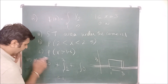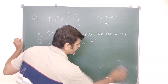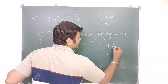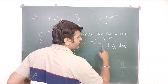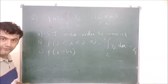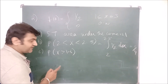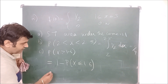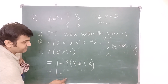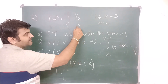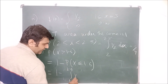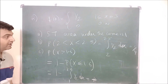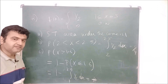Now for the second part: the probability from 2 to 2.5 is the integral from 2 to 2.5 of F(x) dx, which gives 1/2 times 0.5 = 0.25. For the probability that X is greater than 1.6, you use: one minus probability X ≤ 1.6, which is one minus the integral from minus infinity to 1.6 of F(x) dx. Since the function is zero until one, this becomes one minus the integral from one to 1.6 of F(x) dx, and you can solve to get the final answer.